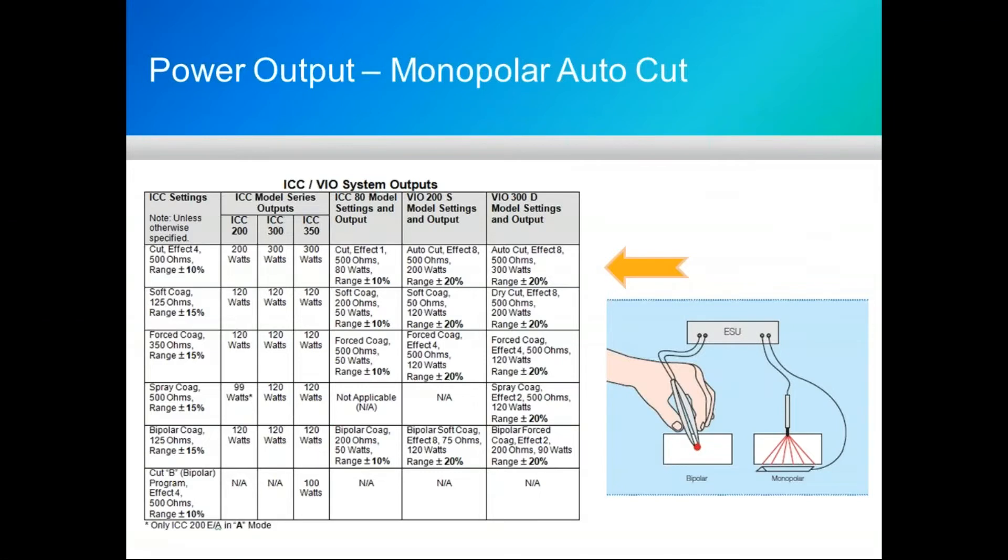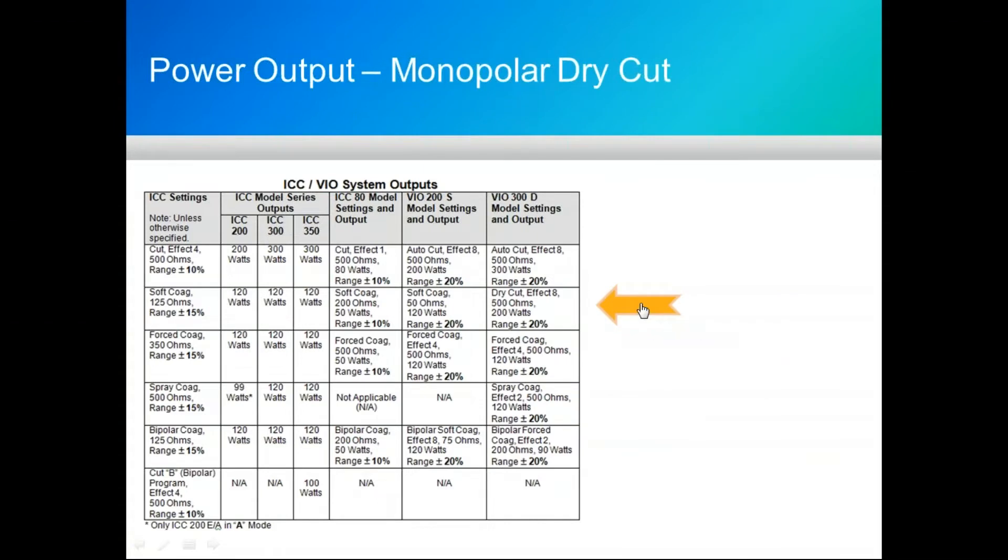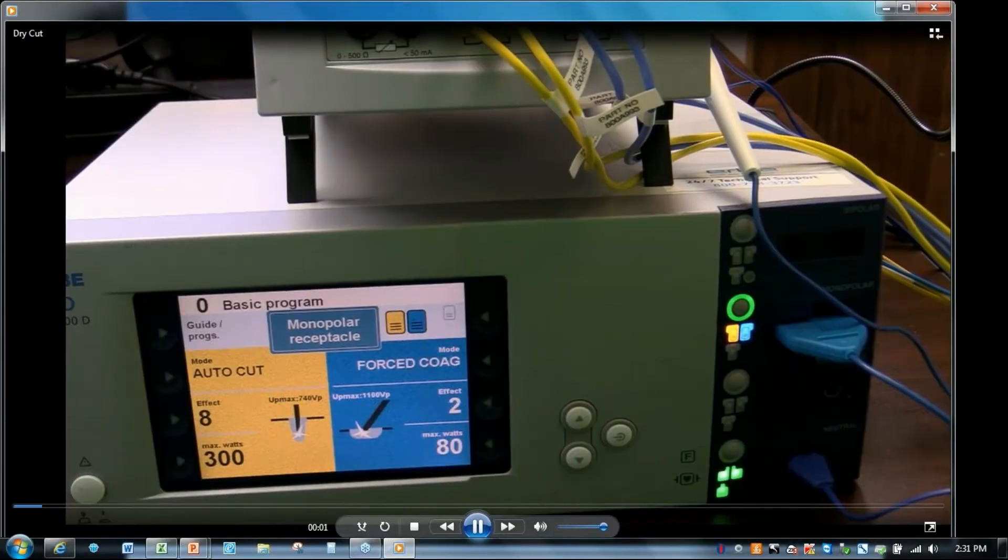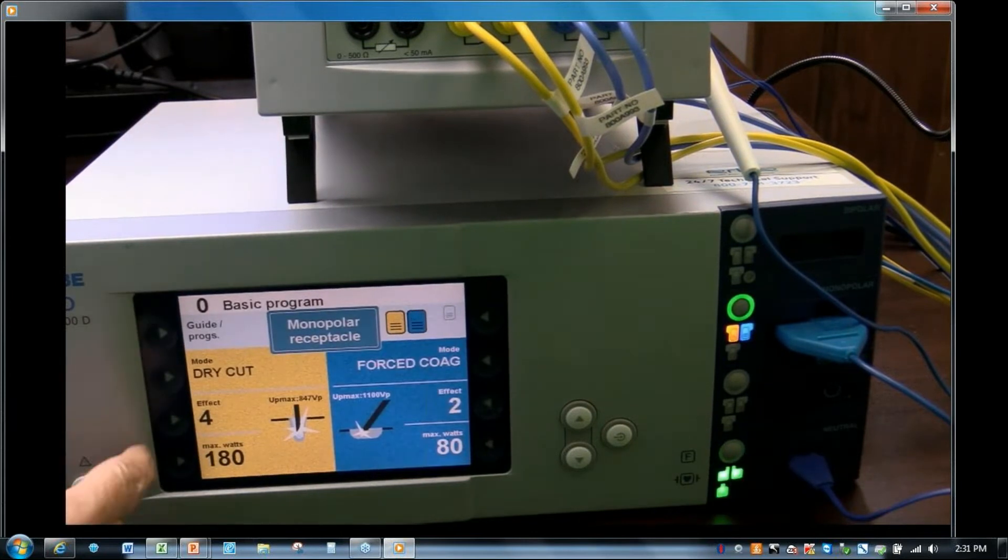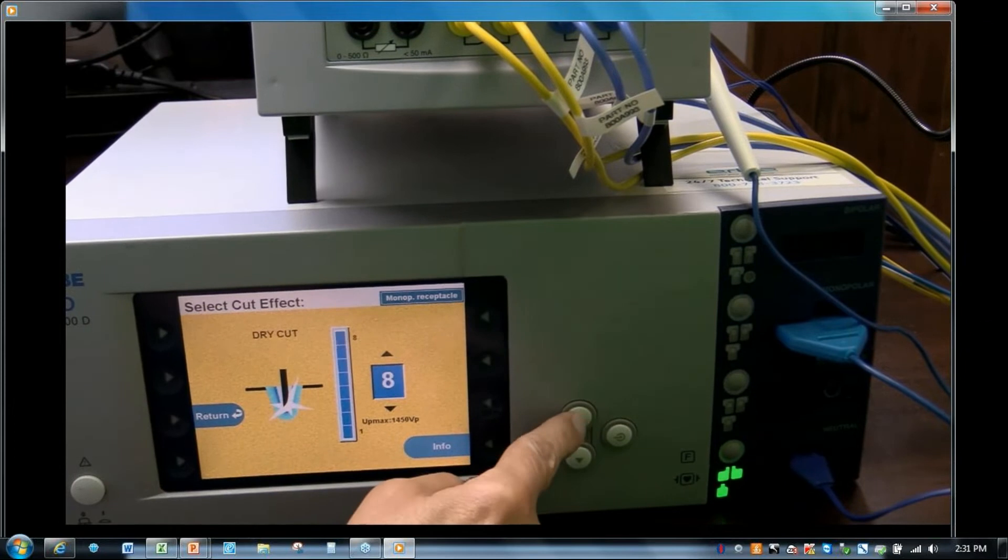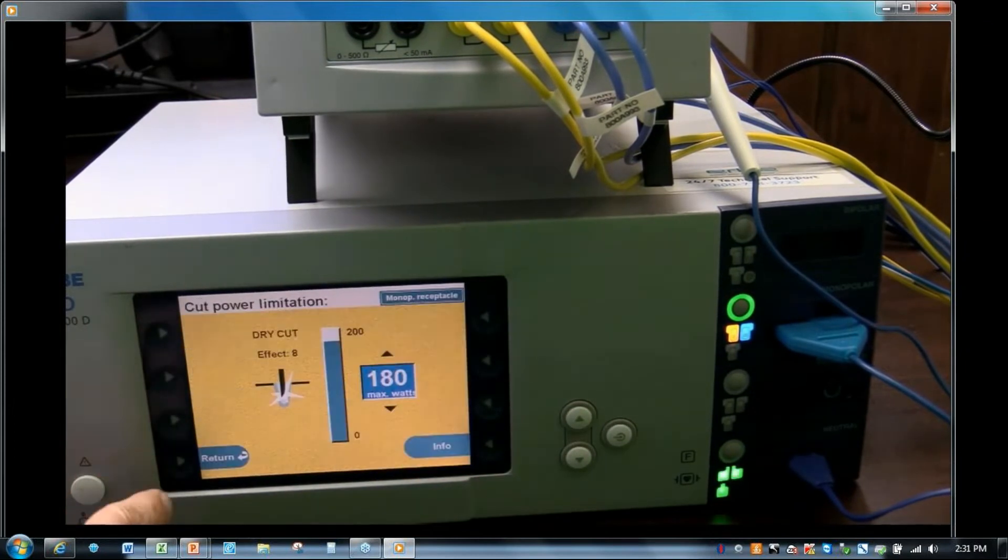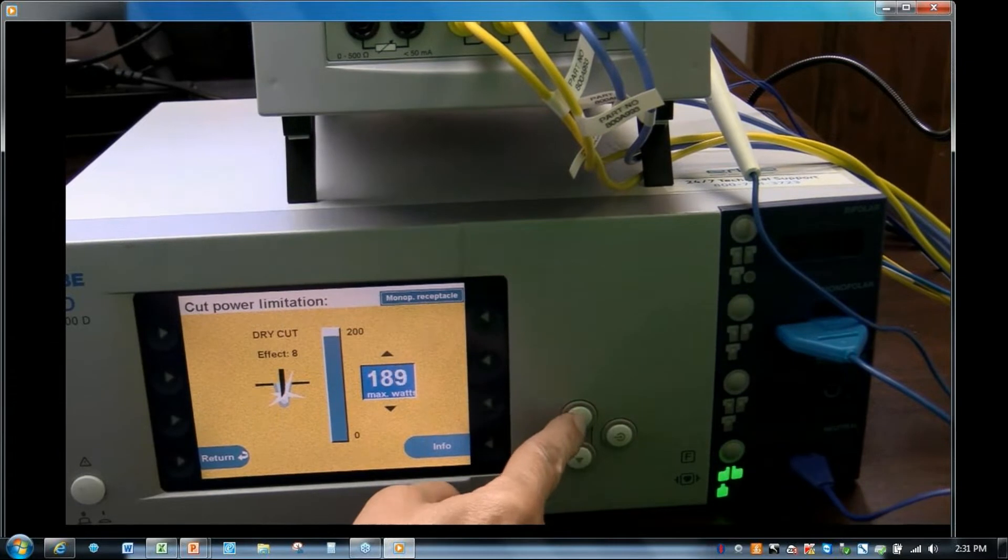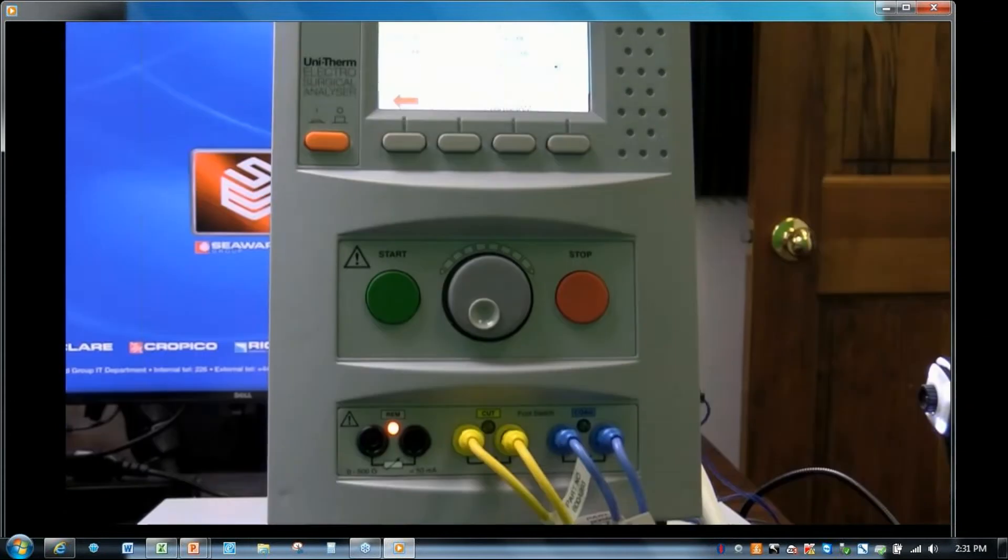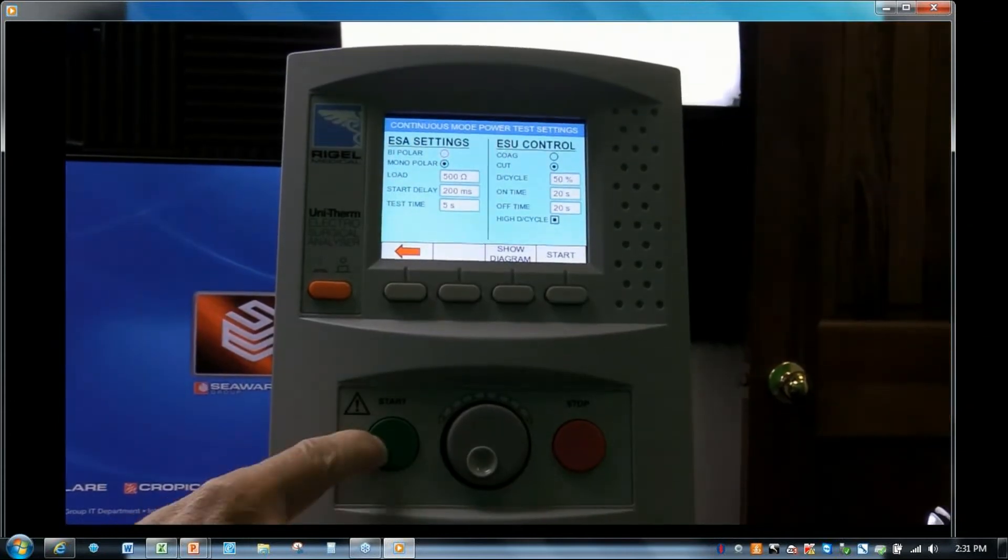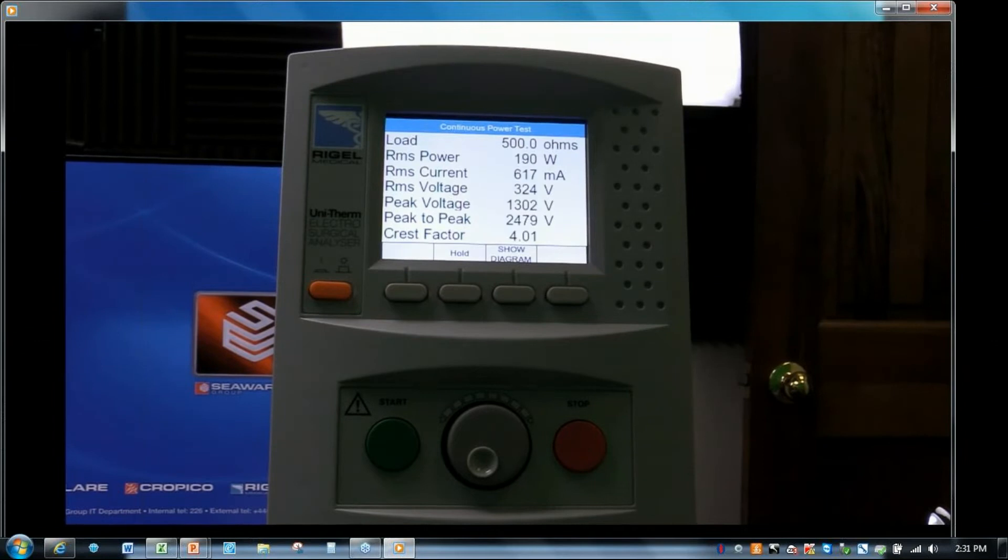That was our auto cut. Now we're going to change things around and do the dry cut. Notice the visual is changing a bit depending on the effect settings and selections I make, whether it's auto cut or dry cut. Start my test and capture my data.